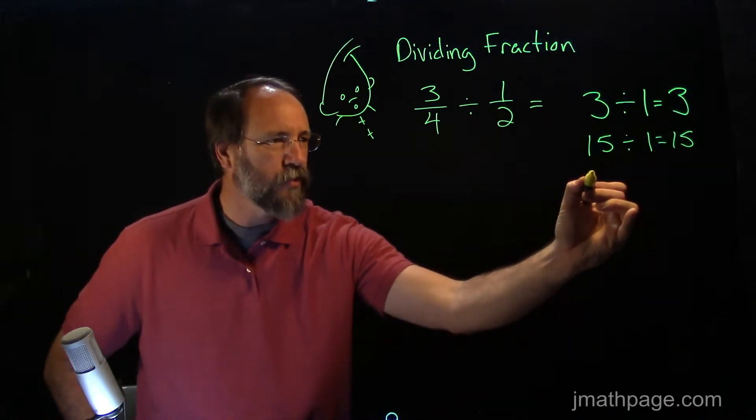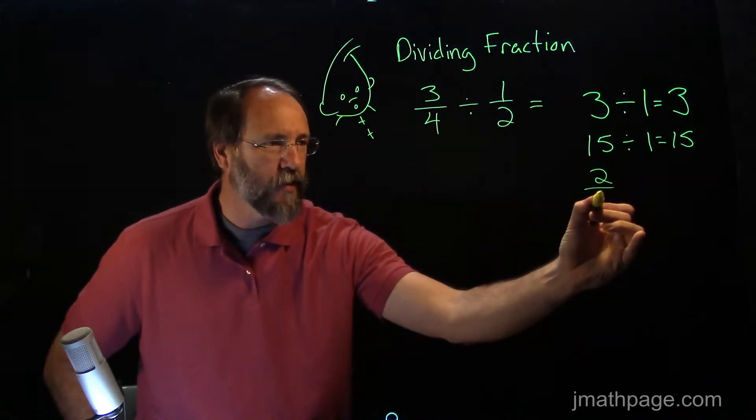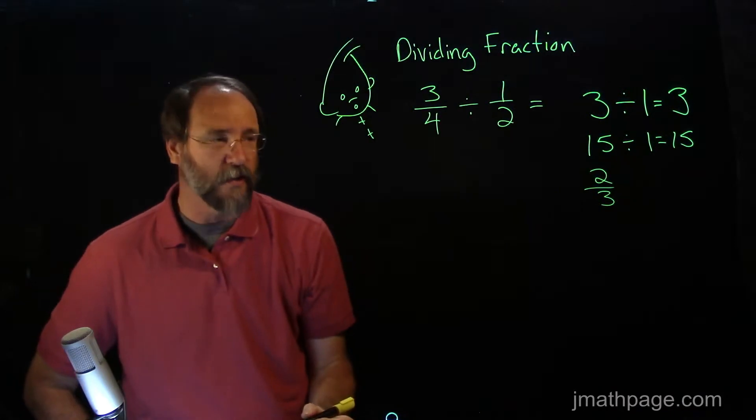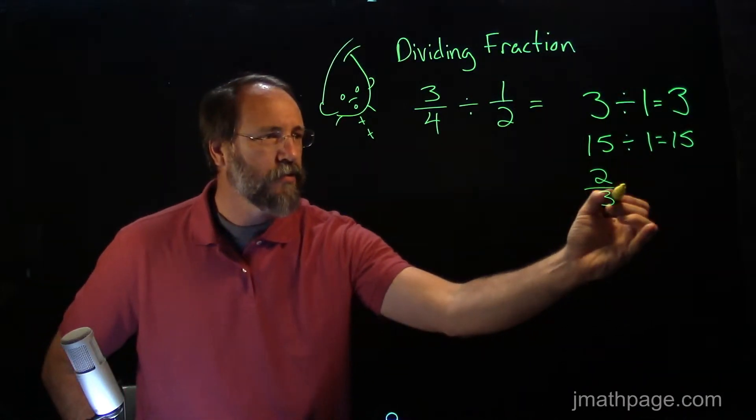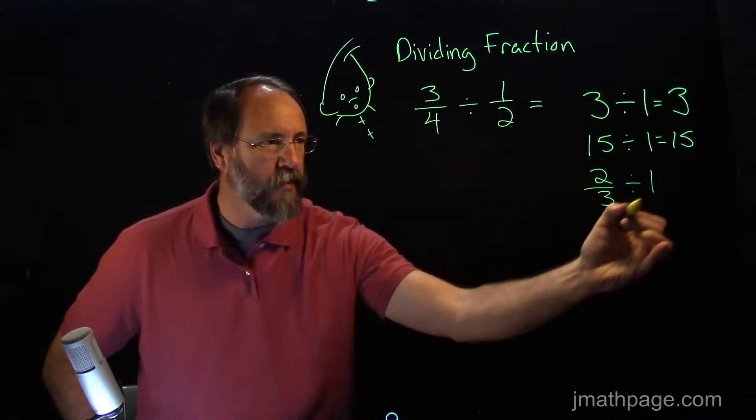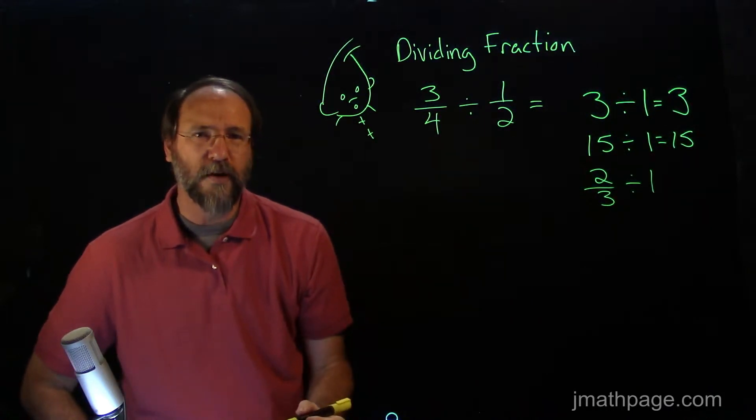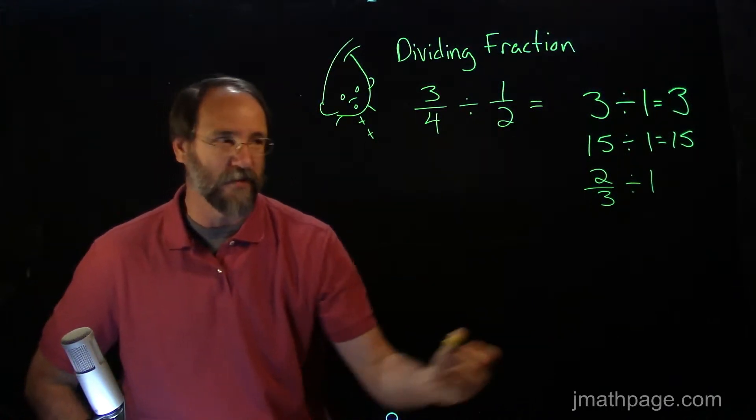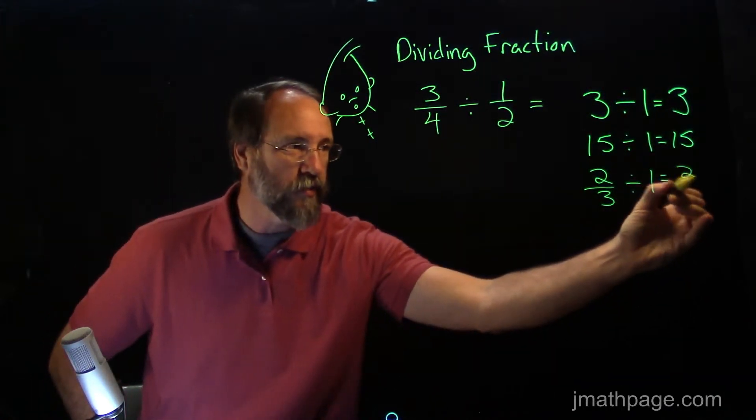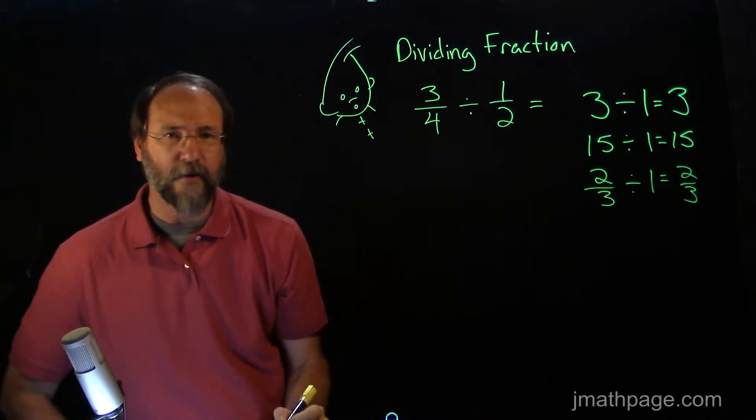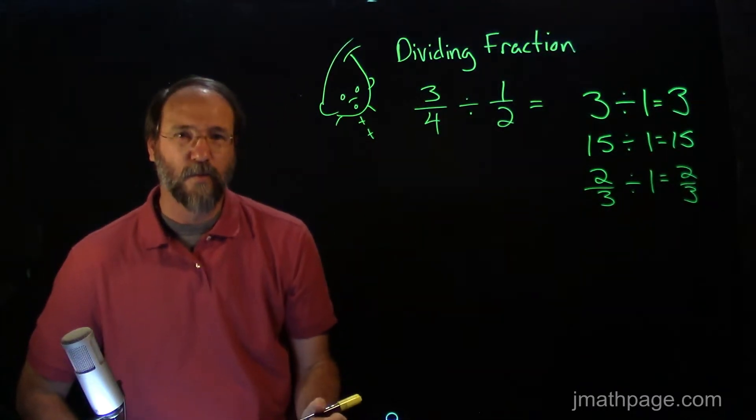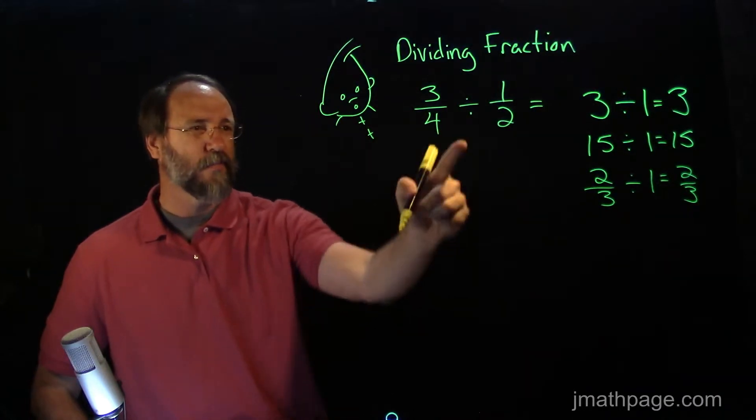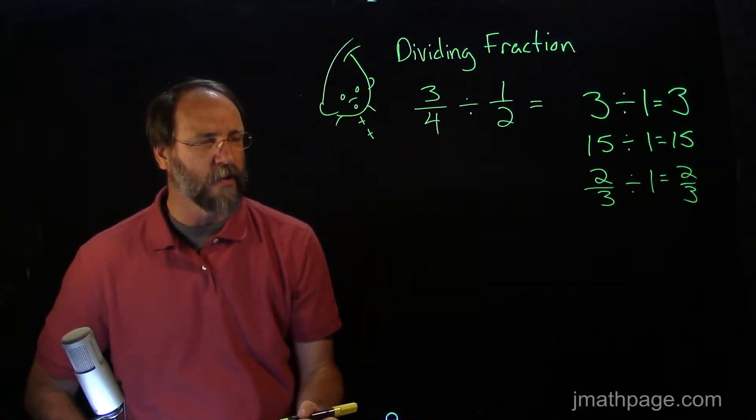So, this also works for fractions. And this is going to be a little bit tricky, but it's the same idea. Two-thirds divided by one is asking, how many times does one fit into two-thirds? It only fits in two-thirds of a time. But you can see the pattern. So, dividing by one is a really great thing.